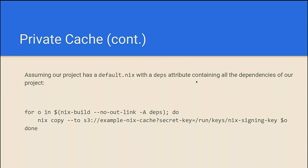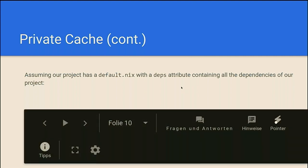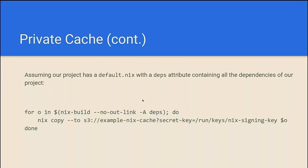Assuming your project has a default.nix and a dependency attribute containing all the dependencies of your project, you might end up doing something like this — you somehow get a list of all the Nix store paths that are part of your build or dependencies, and then you issue a nix copy command if you don't expose the Nix store.